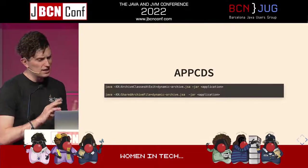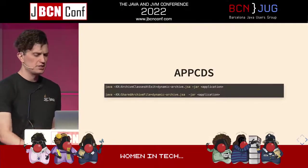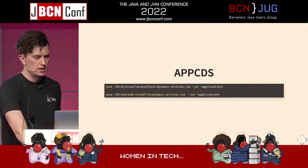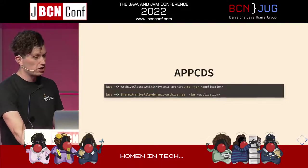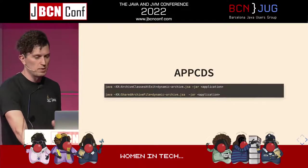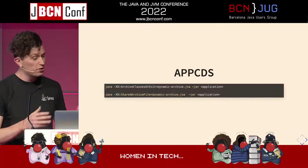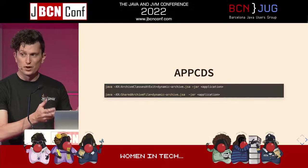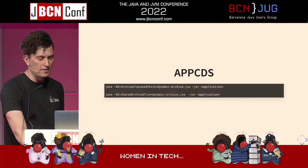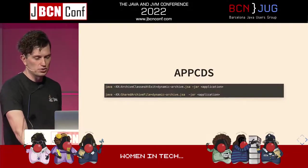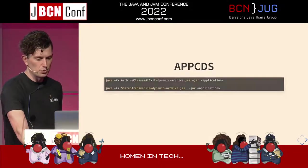The JVM will only load the classes it actually needs from the archive. Since teams often use similar tech stacks across applications — Spring Boot, Quarkus, Micronaut — you can create one dynamic archive and use it for all your applications, since the vast majority of classes in production are from underlying dependencies, not code you wrote yourself. Definitely check out AppCDS. It's not talked about enough, and it's a very easy and safe way of improving startup time.